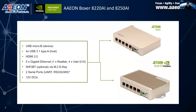The other Boxer products we'll talk about today are the 8220 and 8250. Due to module compatibility, we have the same two products with the same I/O for both the Jetson NANO and Jetson Xavier NX. These feature four USB 3.1 ports, HDMI 2.0, five gigabit Ethernet ports for connecting multiple IP cameras or other network devices, optional Wi-Fi and Bluetooth via an M.2 Key E module, two serial ports, and 12V DC power input.